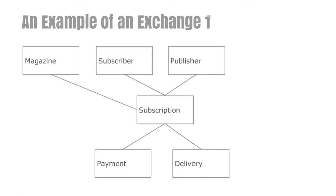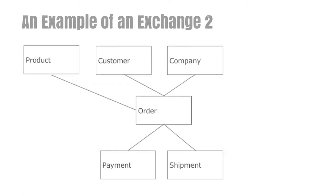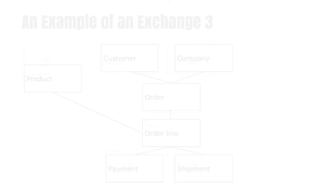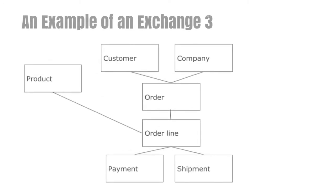This simple example can easily be made more general. Here we have two parties, a customer and a company, who are involved in an exchange. The company ships a product to the customer, and in return, the customer pays the company. This example has exactly the same structure as the previous one, but it's more general. Here is a minor extension of the example where we have introduced order lines, so that a customer can order several different products within one single order.